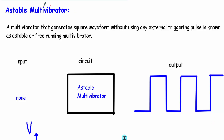In this video, I will talk about the operation of an astable multivibrator. Multivibrators are electronic circuits that produce non-sinusoidal waveforms, especially square, rectangular, and sawtooth waveforms.